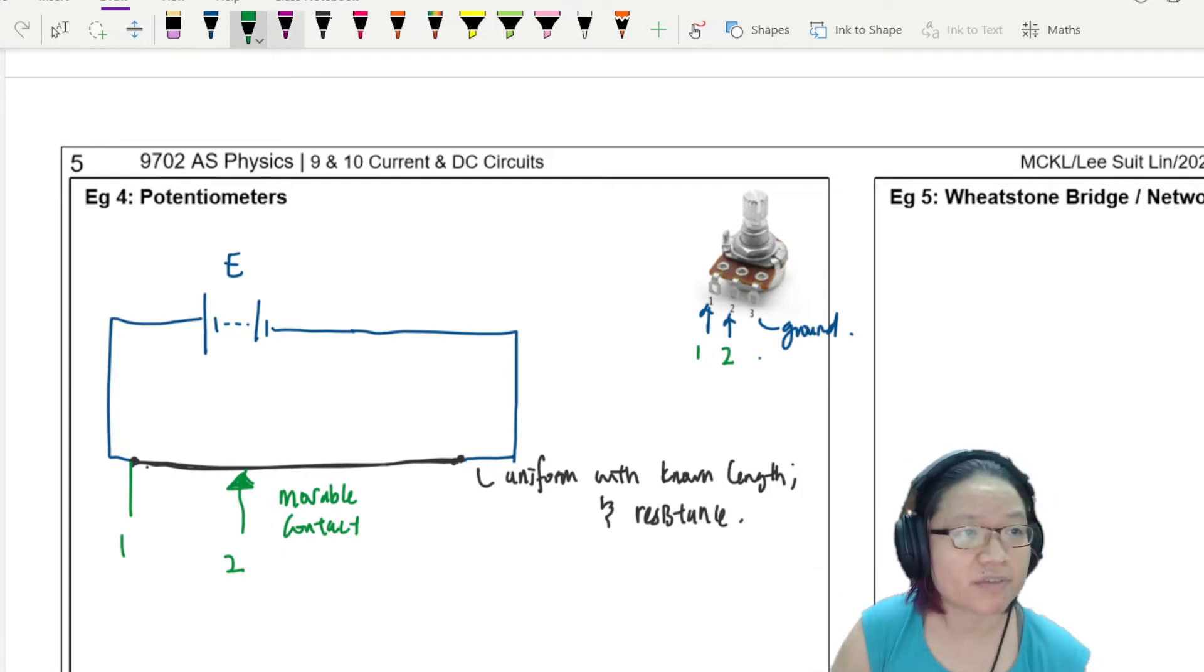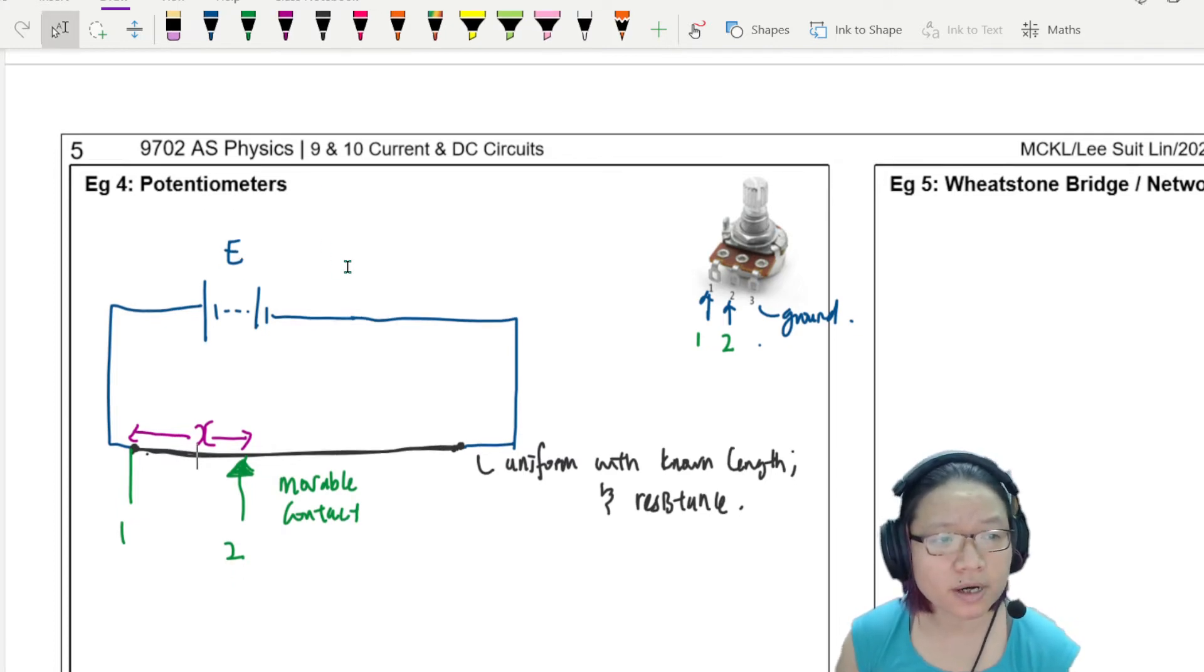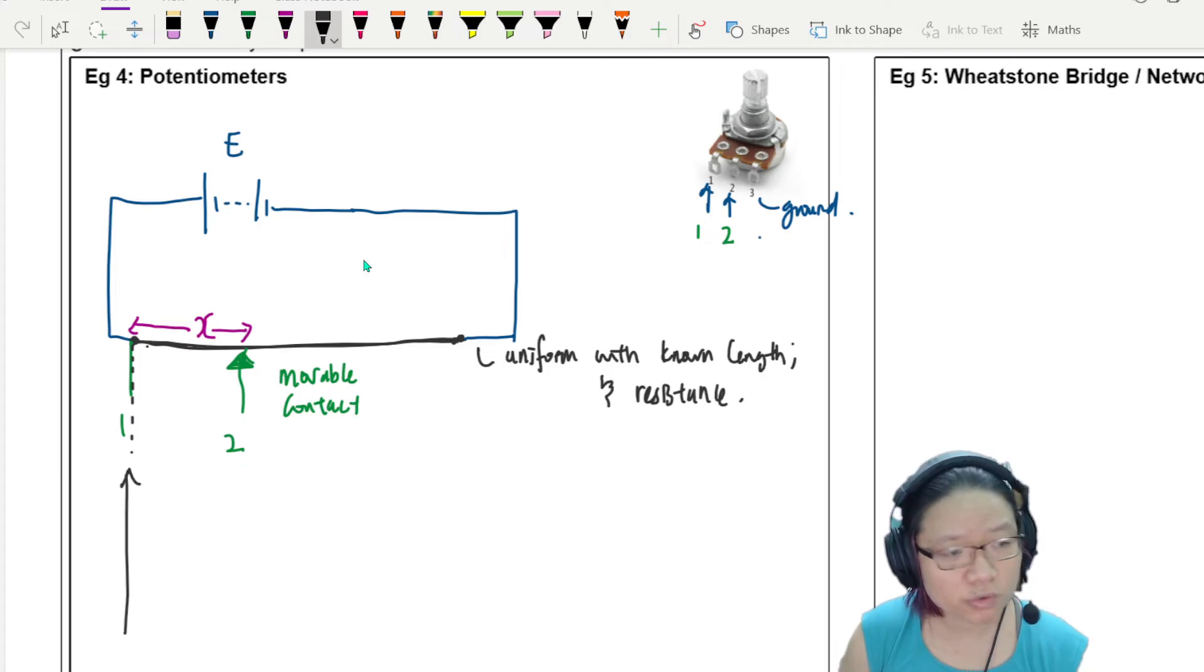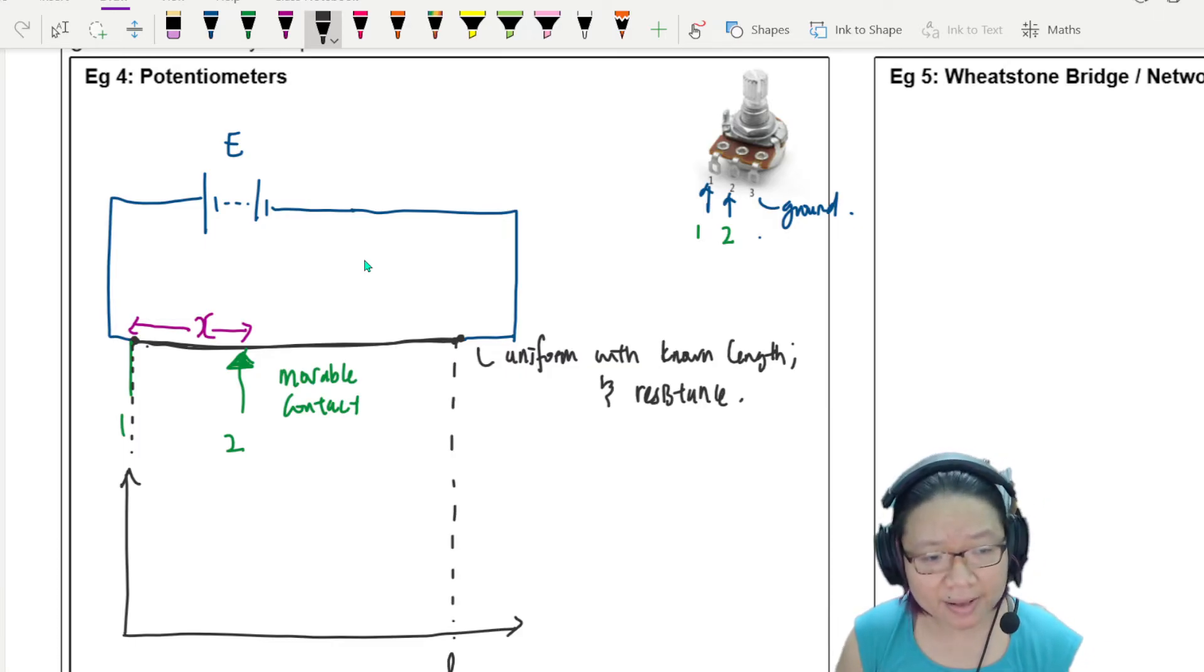So you see you have connection one and connection two. So in the lab, what we'll do is we will take a movable contact. Sometimes we call it a jockey. And we can move it along the wire. And why do we do so? Well, if let's say I have a movable contact, and I connect this along this length here, let's say this length here is x, I know that resistance is proportional to the length.